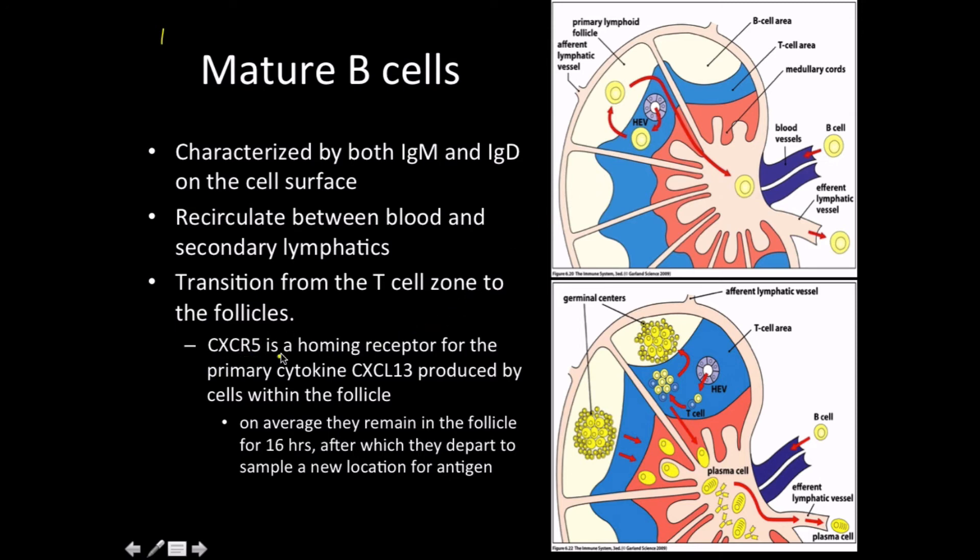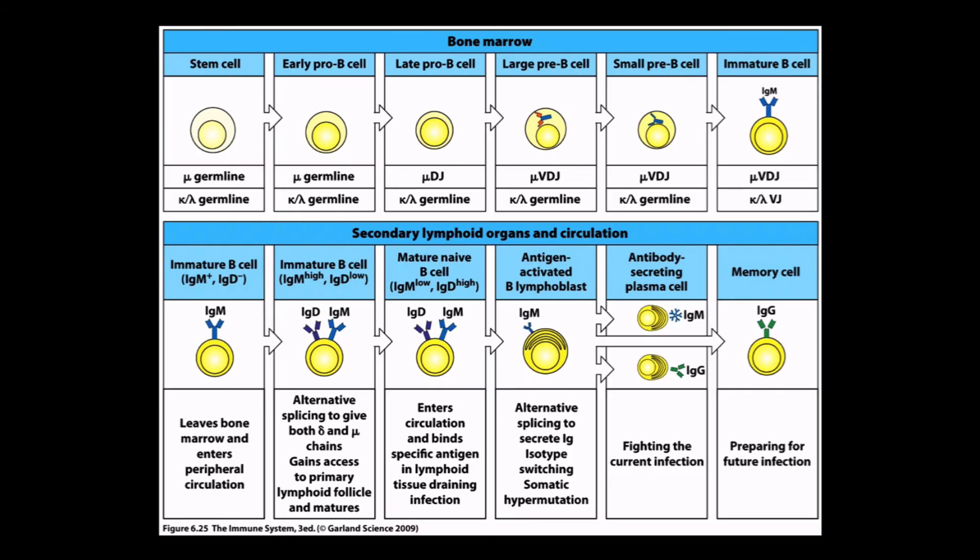CXCR5 is a homing receptor for the primary cytokine CXCL13 produced by cells within the follicle. On average, they remain in the follicle for 16 hours, after which they depart to sample a new location for antigens. They want that signal because if they get it, they can differentiate and reproduce even more, which is good for their selective fitness and good for us in surviving infections.